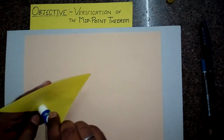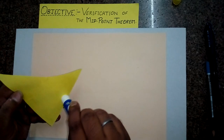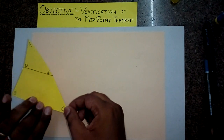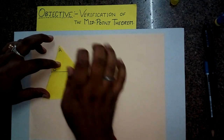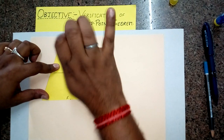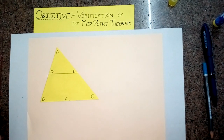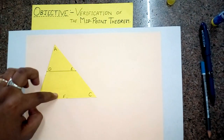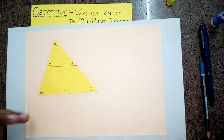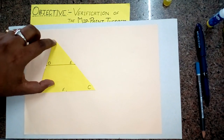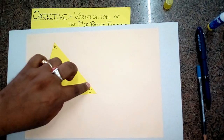Next I am going to paste this triangle on the sheet on which I will write the observation. So let me apply some glue over it. Now since we need to prove that DE and BC are parallel, and we have learned in lines and angles that two lines are parallel if the corresponding angles are equal, I am going to prove that angle AED is equal to angle ACB — if these two angles are equal, then the lines will be parallel.